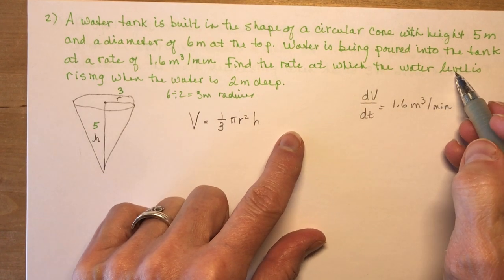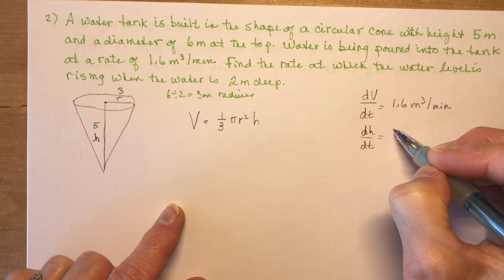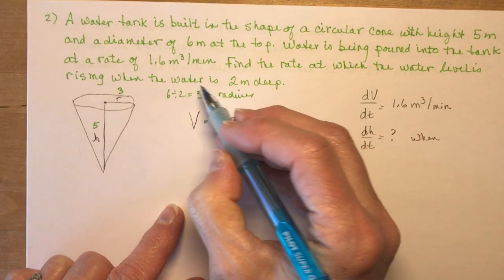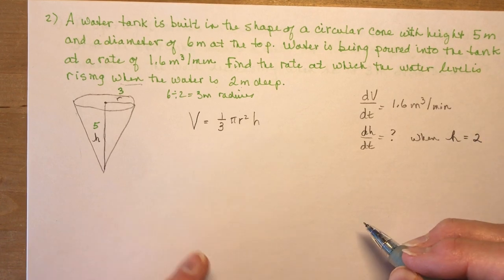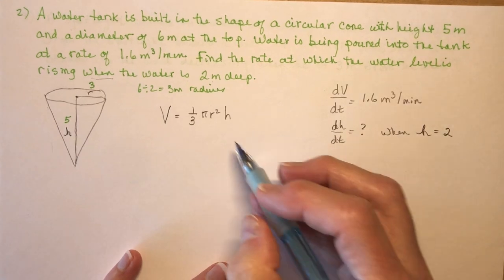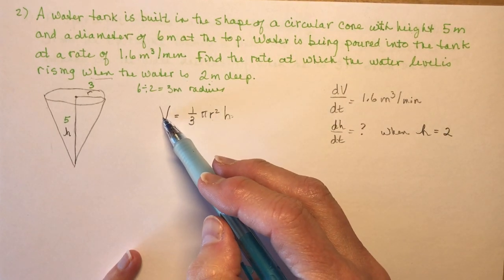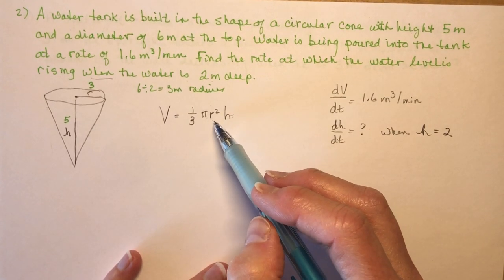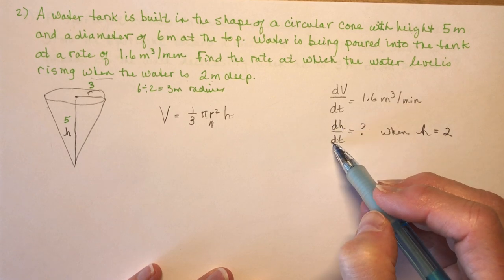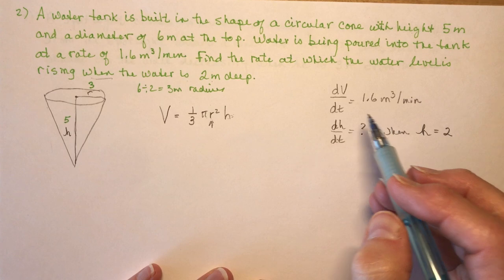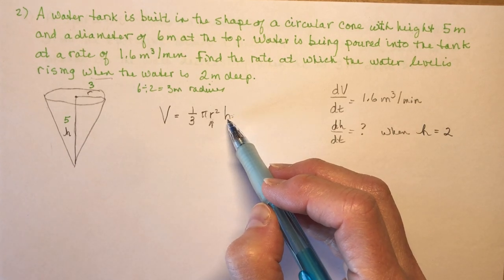I'm trying to find the rate at which the water level is rising, so I'm looking for dh/dt — when the depth is two meters, meaning when h equals two. With this question we have a problem: there are two variables on the right side of the equation and we don't want to take the derivative with respect to three different variables. So I need to write one variable in terms of the other. The one to eliminate is the radius, because I'm trying to find dh/dt.